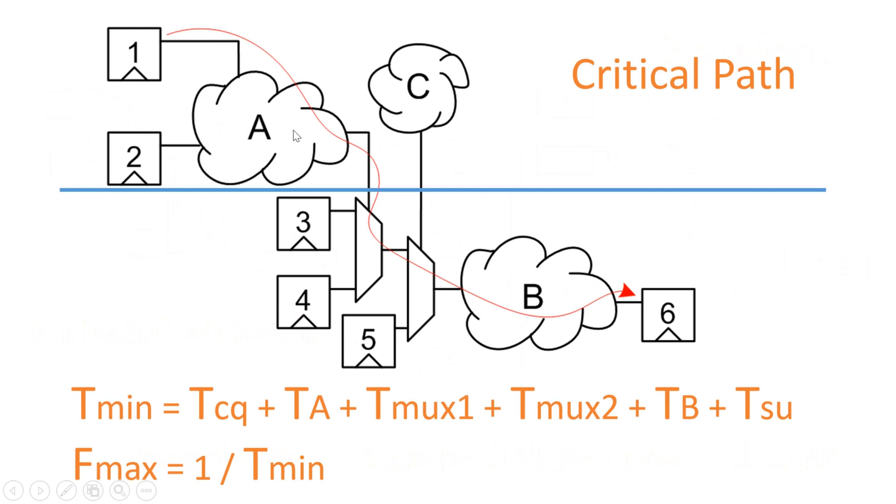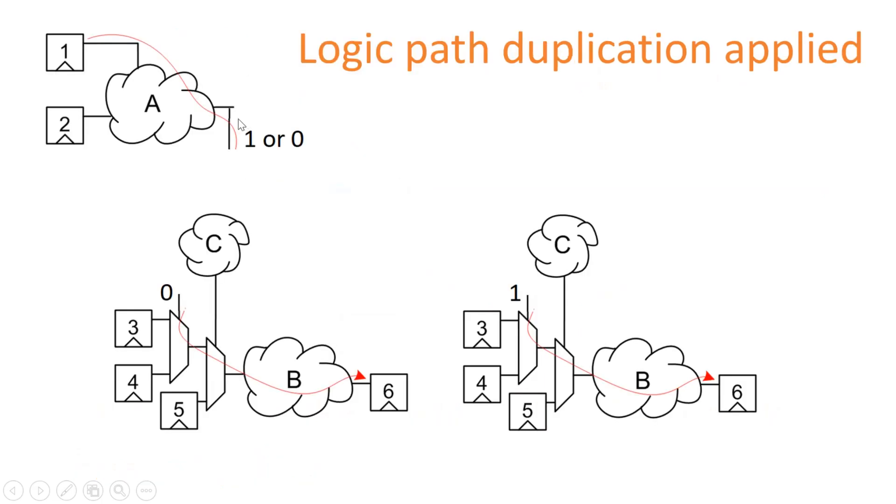This was my critical path and as per combinational logic duplication technique I need to cut this critical path into two parts. So I am going to cut this critical path from here and I will duplicate this combinational logic so that this combinational logic can work in parallel with this combinational logic A.